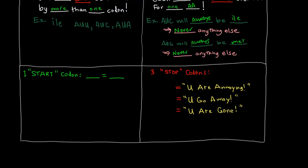Something else I do want to mention is that there's one start codon. That one start codon is AUG, and that AUG codes for the amino acid methionine. There are three stop codons, and those three stop codons are UAA, UGA, and UAG.